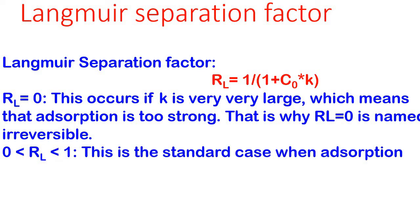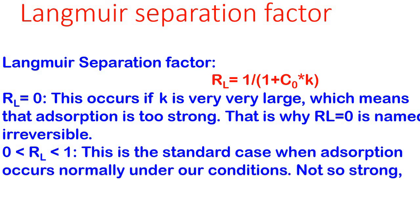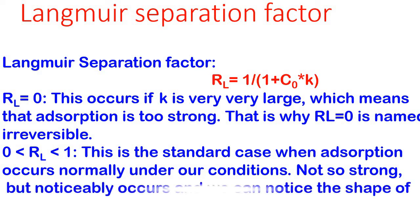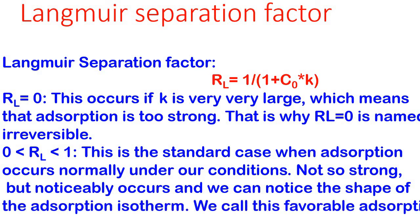Well, when 0 < RL < 1, this is the standard case when adsorption occurs normally under experimental conditions. Not so strong, but noticeably occurs when we can notice the shape of adsorption isotherm. We call this favorable adsorption.